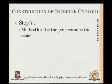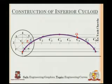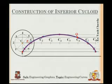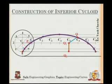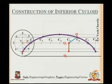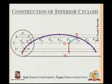The method for drawing the tangent remains the same. I take a point Q, then use radius CP0 — the distance between the center of the circle and point P0 — cut an arc on the center line to get Q1, join Q to Q1, and draw a perpendicular from Q1 to get Q2.